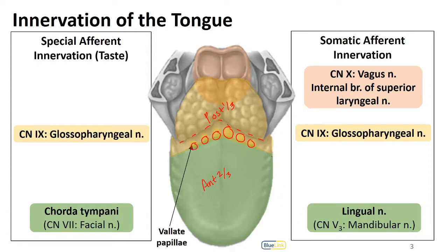Anterior to these papillae, general sensory information is coming through the lingual nerve, or through V3. Posterior to that line — and including the vallate papillae — general sensory information will go through the glossopharyngeal nerve. There is also some innervation from the vagus nerve, as it innervates the area of the larynx. This structure here is the epiglottis, so that overlap happens at the root of the tongue most posteriorly.